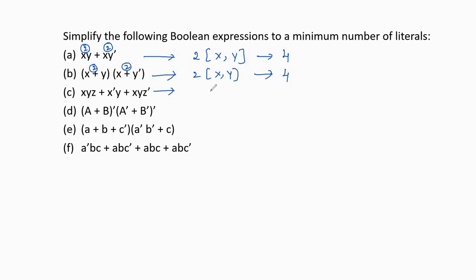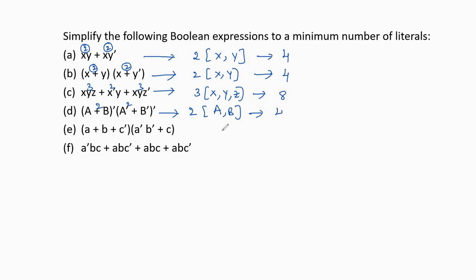For the third expression, we have 3 input variables x, y, and z, and the number of literals is 8. The fourth expression has input variables a and b, with 4 literals. For the fifth expression, we have 3 input variables a, b, and c, and the number of literals is 12.